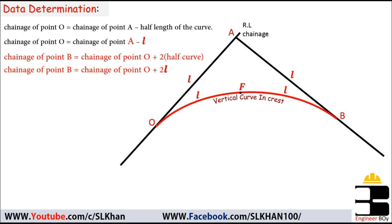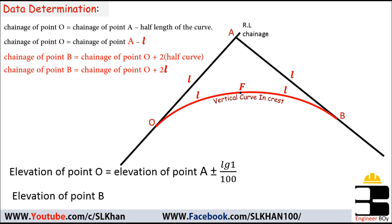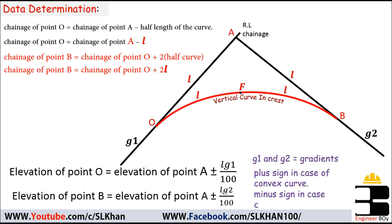For this we have plug-and-play formulas. The elevation of point O equals the elevation of point A plus or minus L·G1 divided by 100, and the elevation of point B equals the elevation of point A plus or minus L·G2 divided by 100. Where G1 and G2 are the gradients, and the plus sign is used for convex curves while the minus sign is used for concave curves.